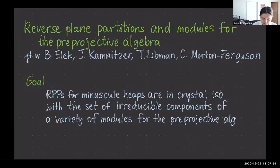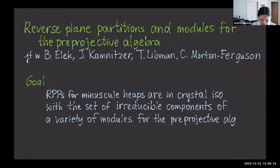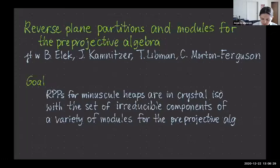Our input is a simply-laced Lie algebra G. The simply-laced assumption is needed in order to construct the pre-projective algebra. The finite type assumption maybe can be dropped, but it's not something we got around to yet. The input to the pre-projective algebra is the quiver of G. So for instance, if it's type D4, a quiver is just an orientation of the Dynkin diagram of our group.